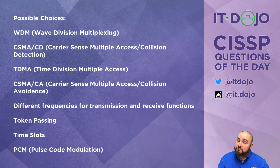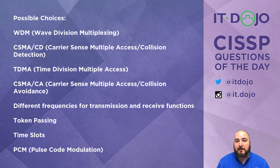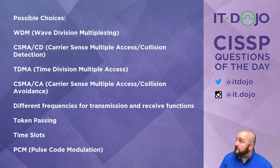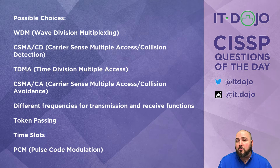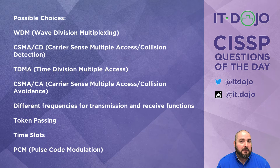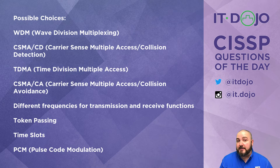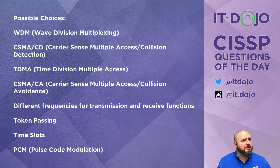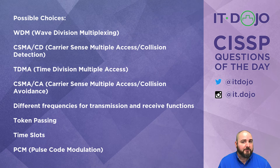The first choice on the list is wave division multiplexing, WDM — that's a no. WDM is more associated with fiber optic transmissions, not what we're looking for here. Second option on the list, CSMA/CD, carrier sense multi-access with collision detection — no, that is how Ethernet, old school half duplex Ethernet, did it for copper-based transmissions, so that's not what we're looking for here. Third option on the list is TDMA, time division multiple access. TDMA is more commonly associated with cellular phone networks, not with 802.11 wireless LANs, so that's not what we're looking for here either.